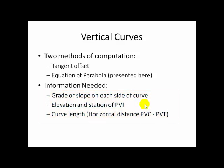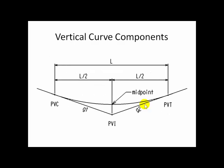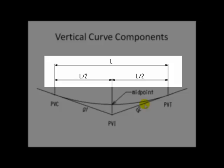We will limit our discussion today to symmetrical vertical curves. These are the components of the vertical curve. The length extends from the PVC to the PVT. It is a horizontal length. Because this curve is symmetrical, the length is split evenly so that half of the length runs from the PVC to the PVI, and the other half runs from the PVI to the PVT.